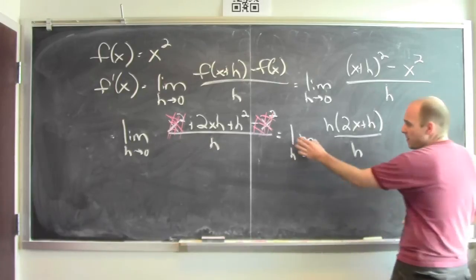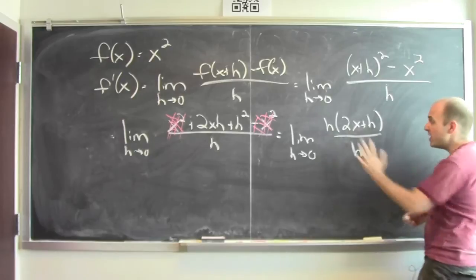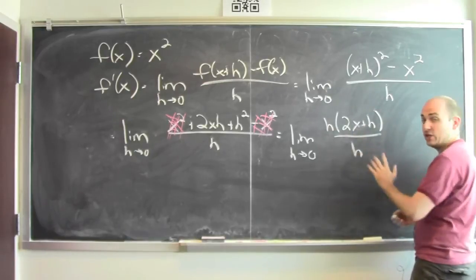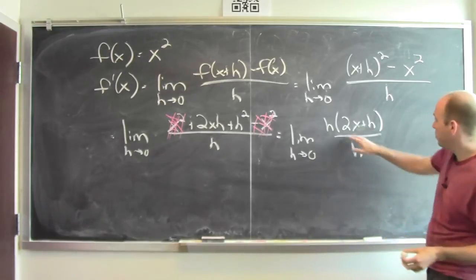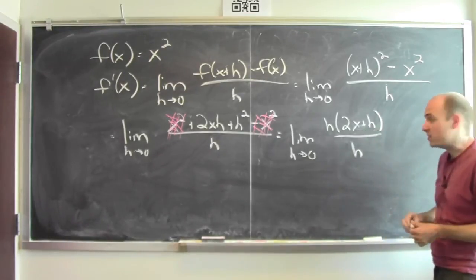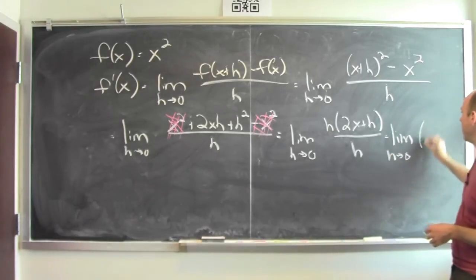I'm taking the limit as h goes to 0 of h times (2x + h) over h. This is not defined when h equals 0. But this thing has the same values as just 2x + h as long as h isn't 0. So they have the same limit. So this is the same as the limit as h goes to 0 of just 2x + h.